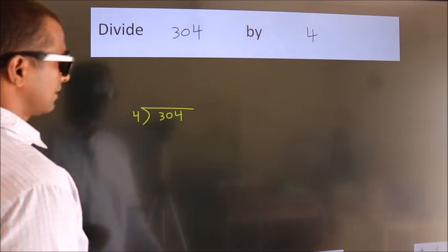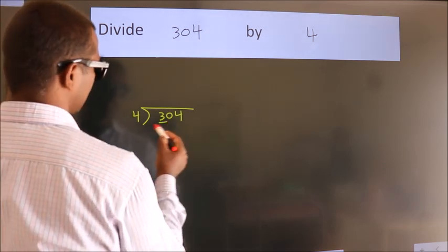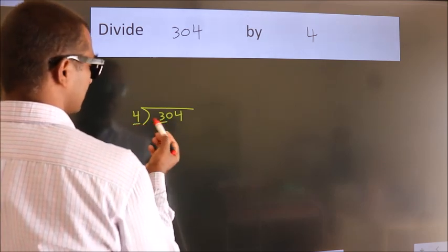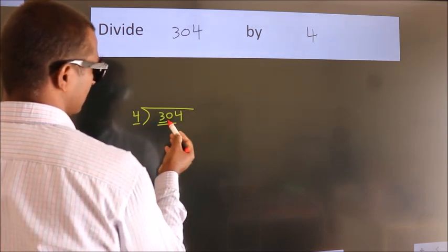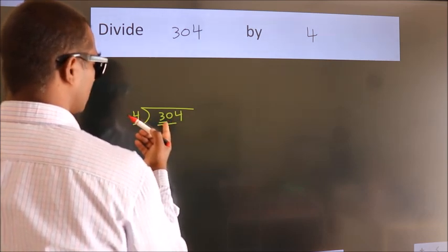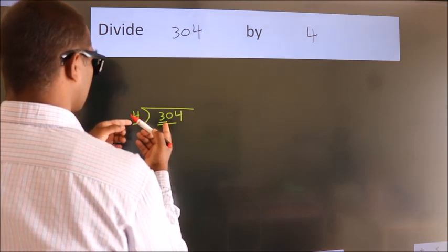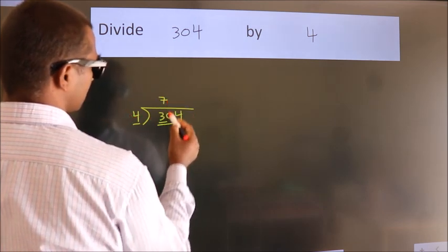Next, here we have 3, here 4. 3 smaller than 4, so we should take 2 numbers: 30. A number close to 30 in 4 table is 4 sevens, 28.